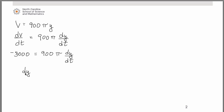Solving for dy/dt, we have -3000 over 900π. We can simplify that, and we'd have -10 over 3π. You can do that as a decimal if you prefer, it's approximately equal to -1.061.